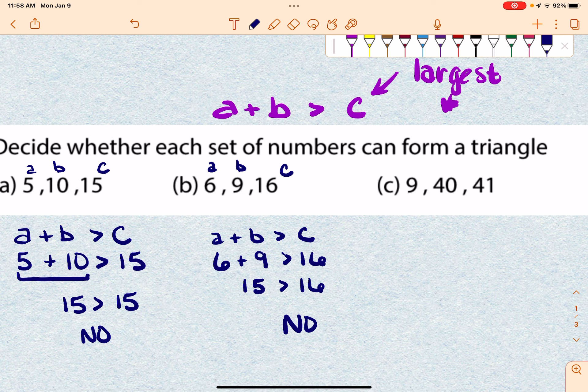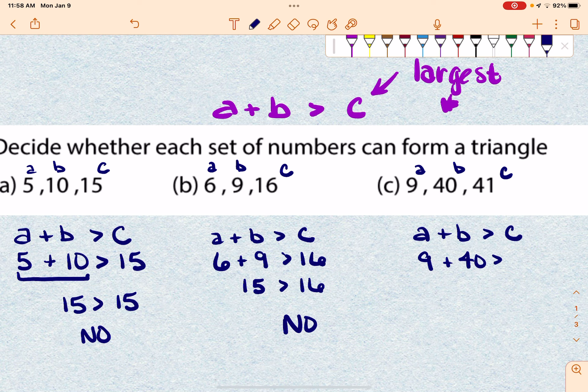Okay, now on the next one, I have 9, 40, and 41. So this is going to be my C. That's going to be A and B. So I'm just trying to set this up. And so 9 and 40, that's 41. So this is going to be 49. So in this case, 49 is greater than 41.